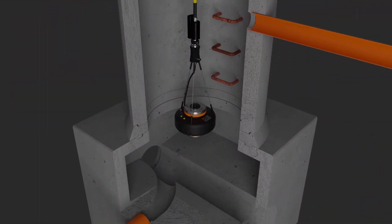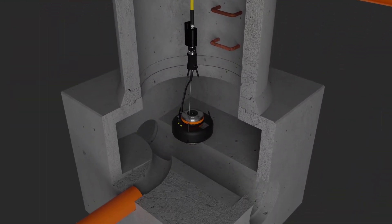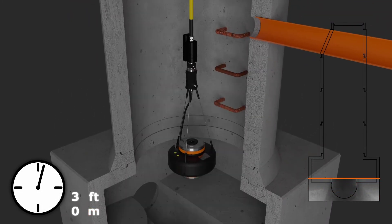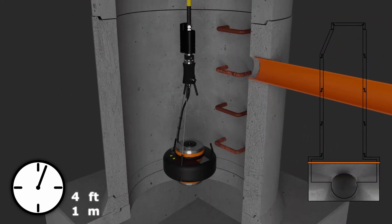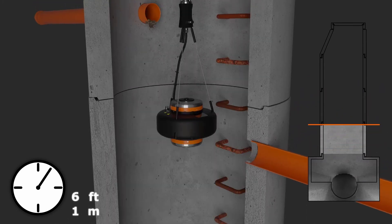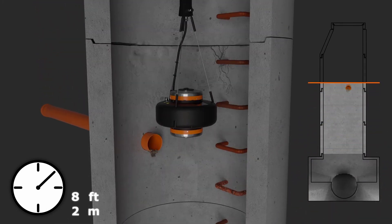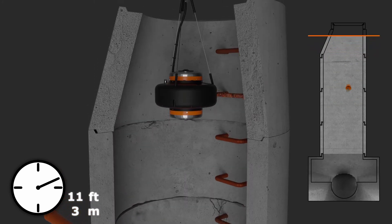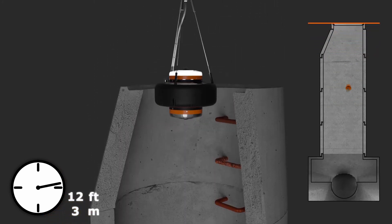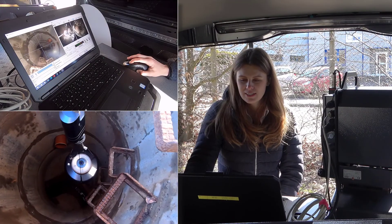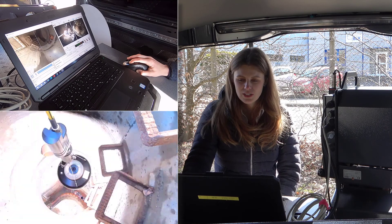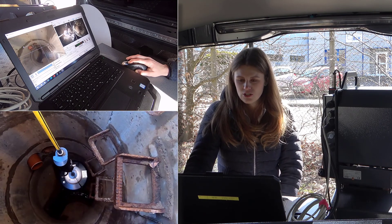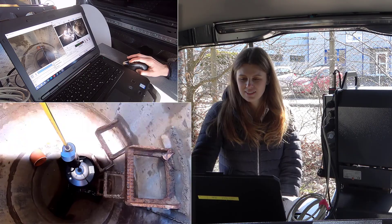Two high-resolution DIGITEC cameras perform a comprehensive optical scan of the complete interior of the manhole in a single vertical movement. The scan is carried out while the camera is on its way back upwards from the bottom of the manhole. With the Panorama SI 4K, the inspector can stop at any desired position in the manhole and pan through 360 degrees.